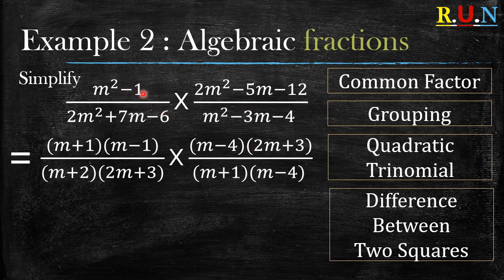So what do we do? We need to factorize all of them. Once you factor out the difference between two squares you get this, and when you factorize the quadratic trinomials you get these brackets.